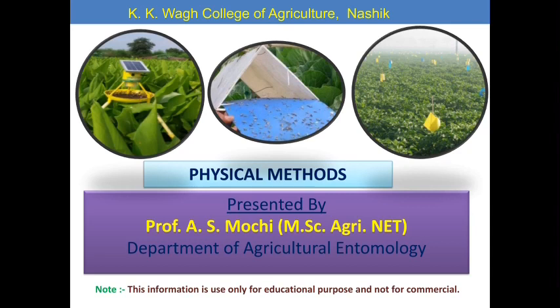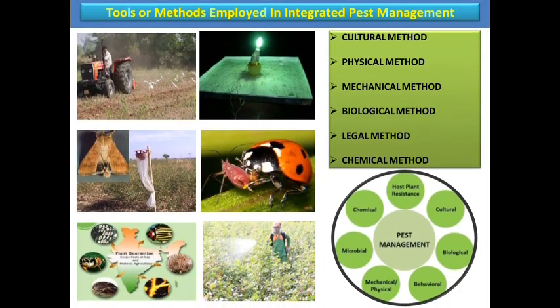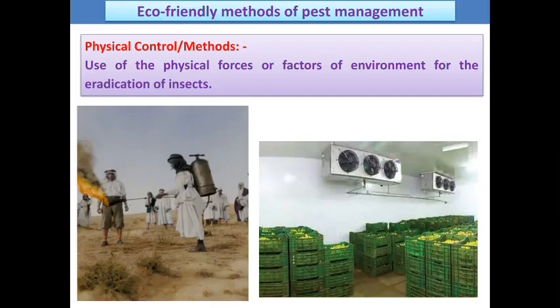Now we can also use different physical methods or physical ways. It will help to reduce the pest population in our fields, godowns, or warehouses. These are the different tools of IPM, and today we will discuss the physical methods of integrated pest management.